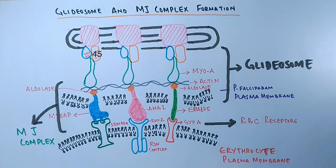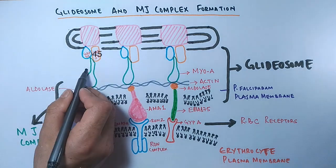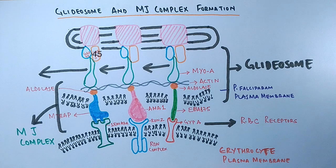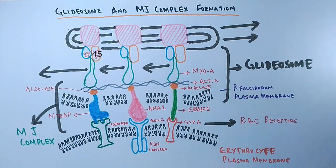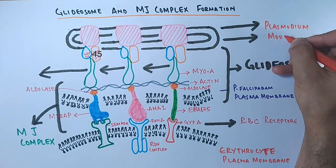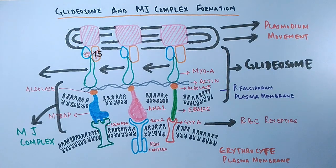The actin filaments and myosin are oriented in the space between the inner membrane complex and plasma membrane so that the myosin propels the actin filaments towards the posterior side of the merozoite. It must be remembered here that the myosin is anchored into the IMC and does not move; rather, the actin filament polymerization aids the motility of the moving junction.